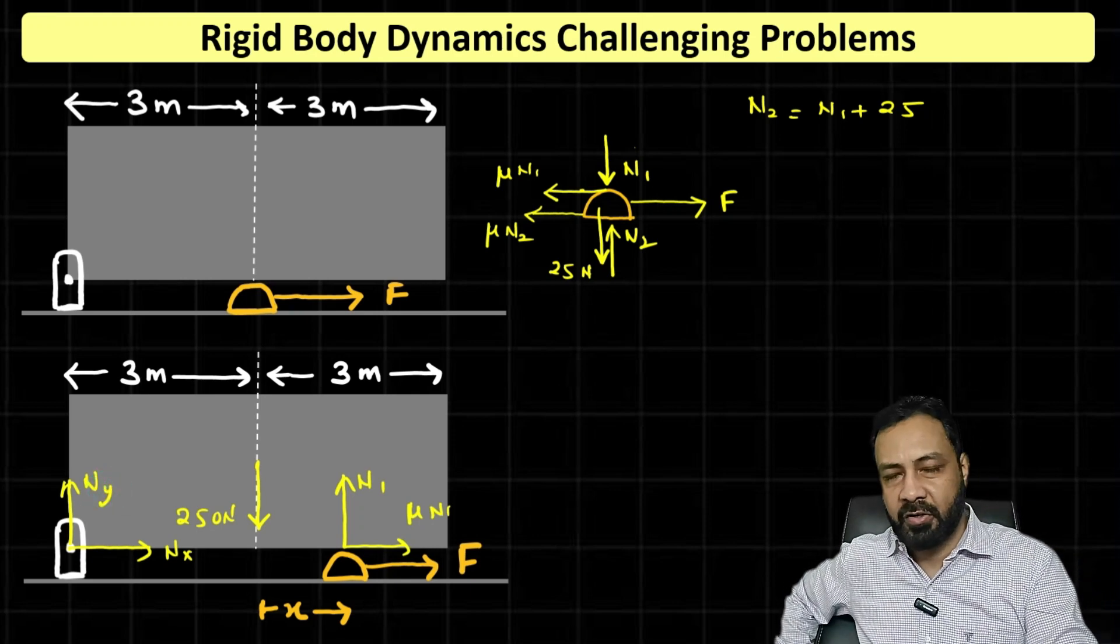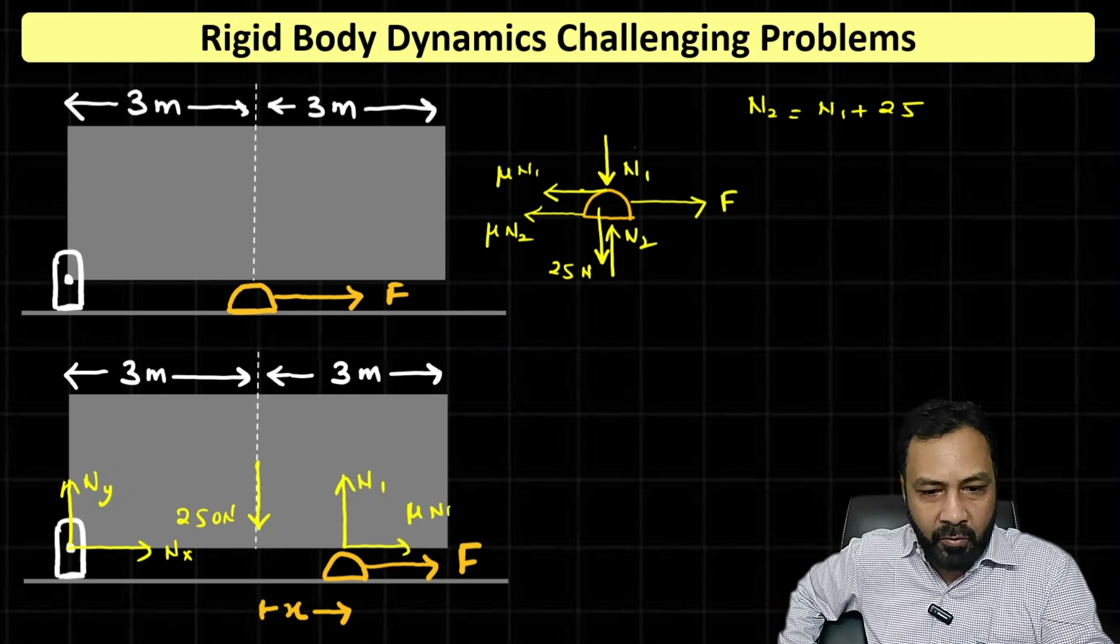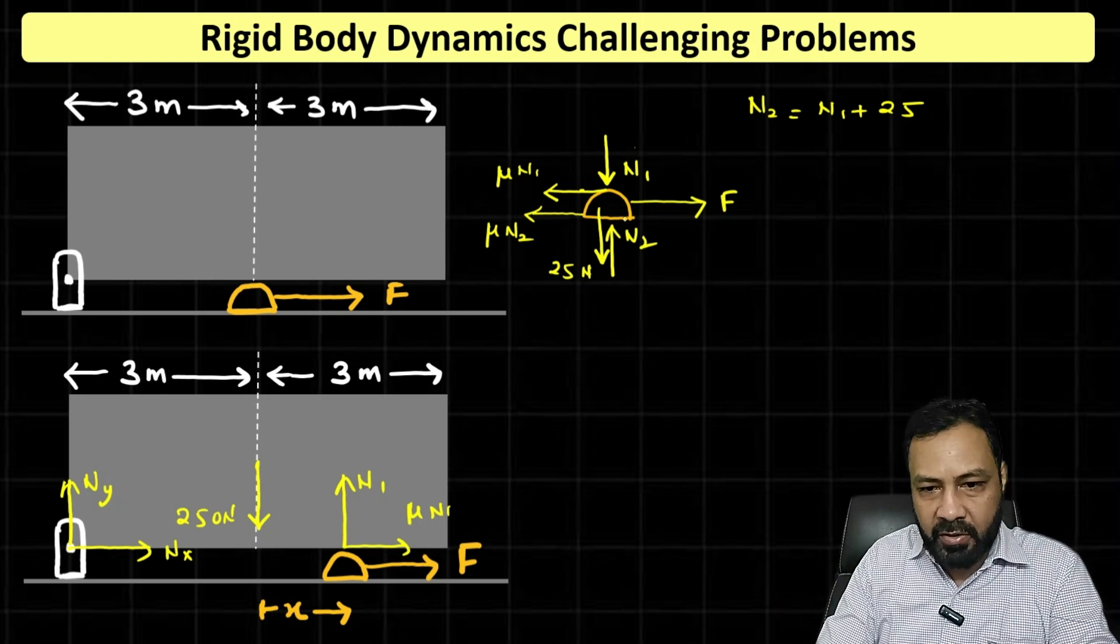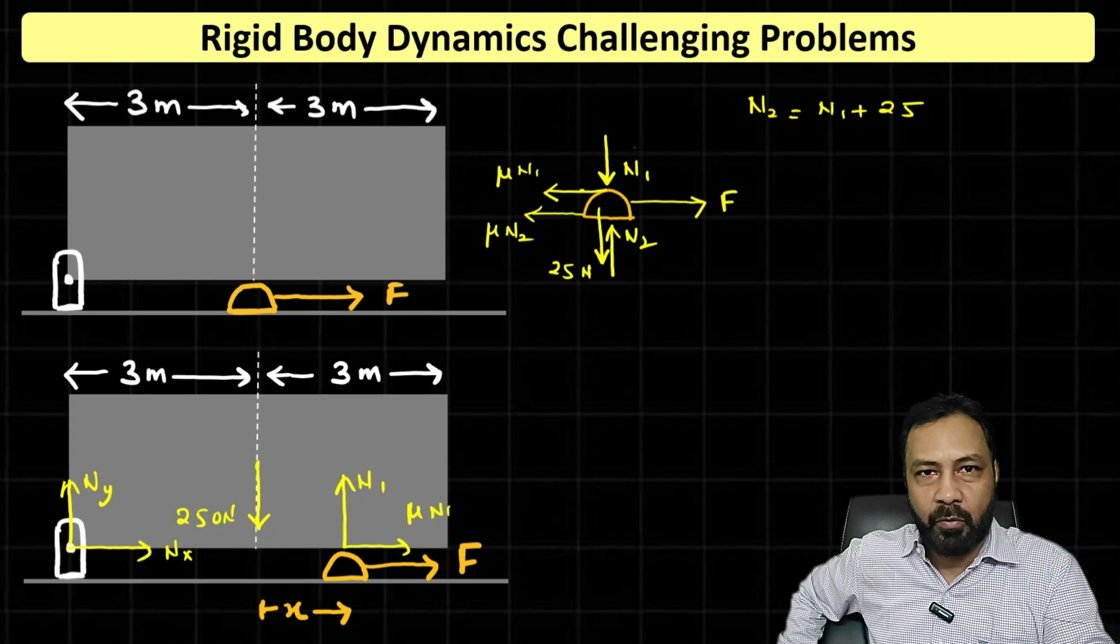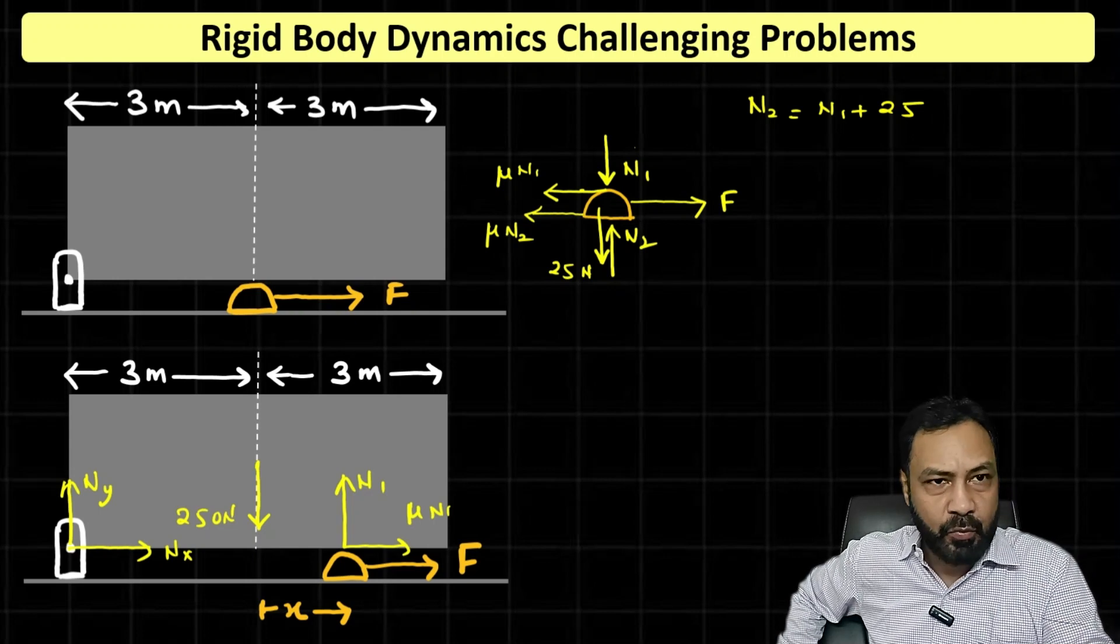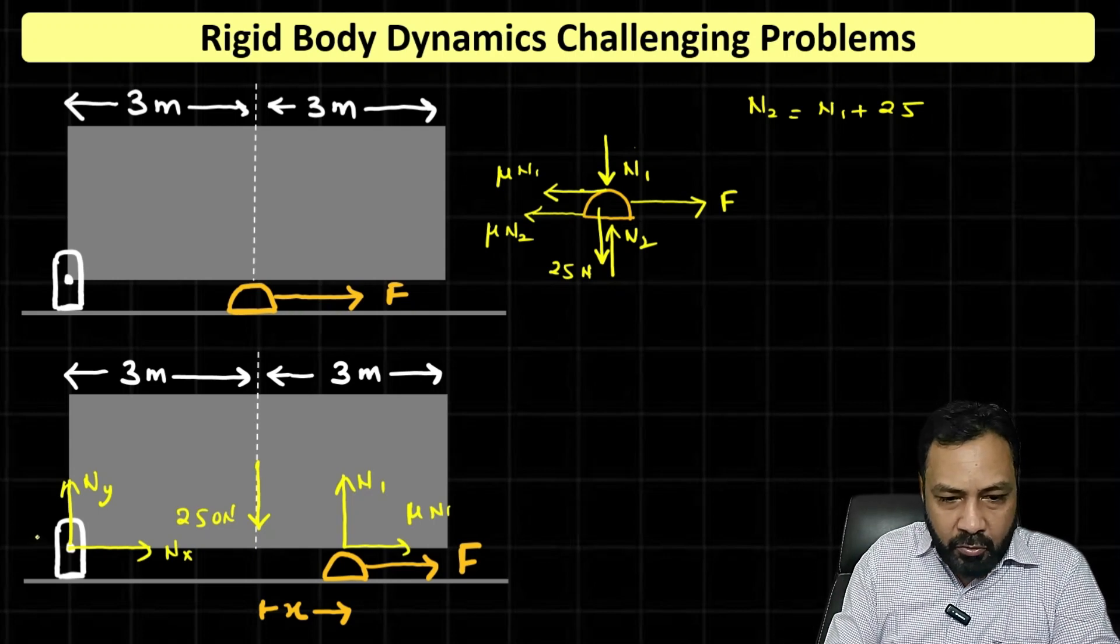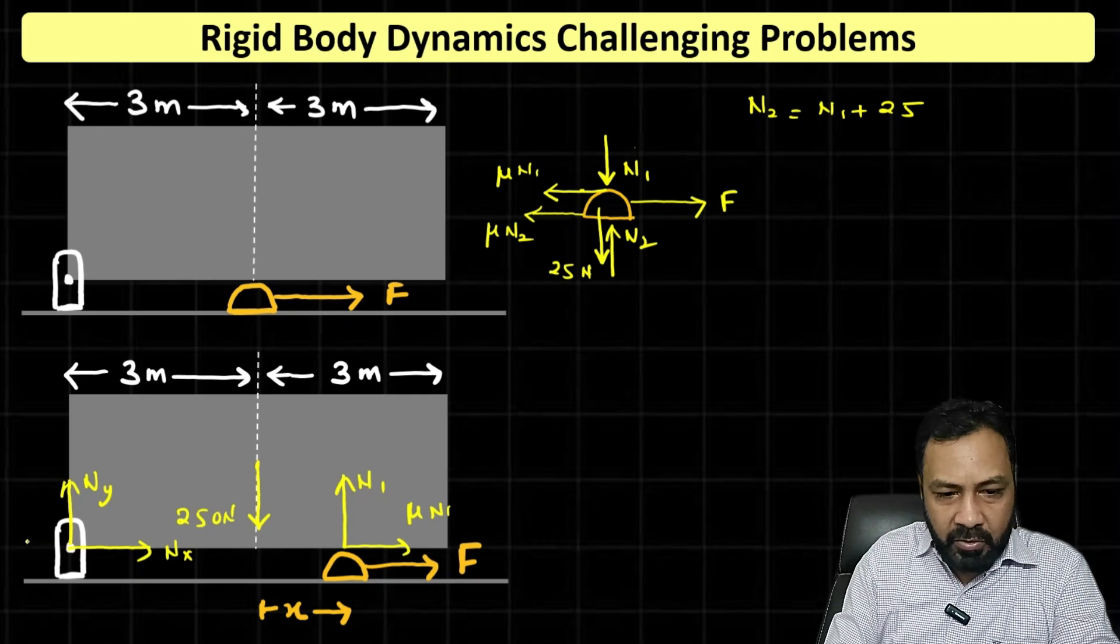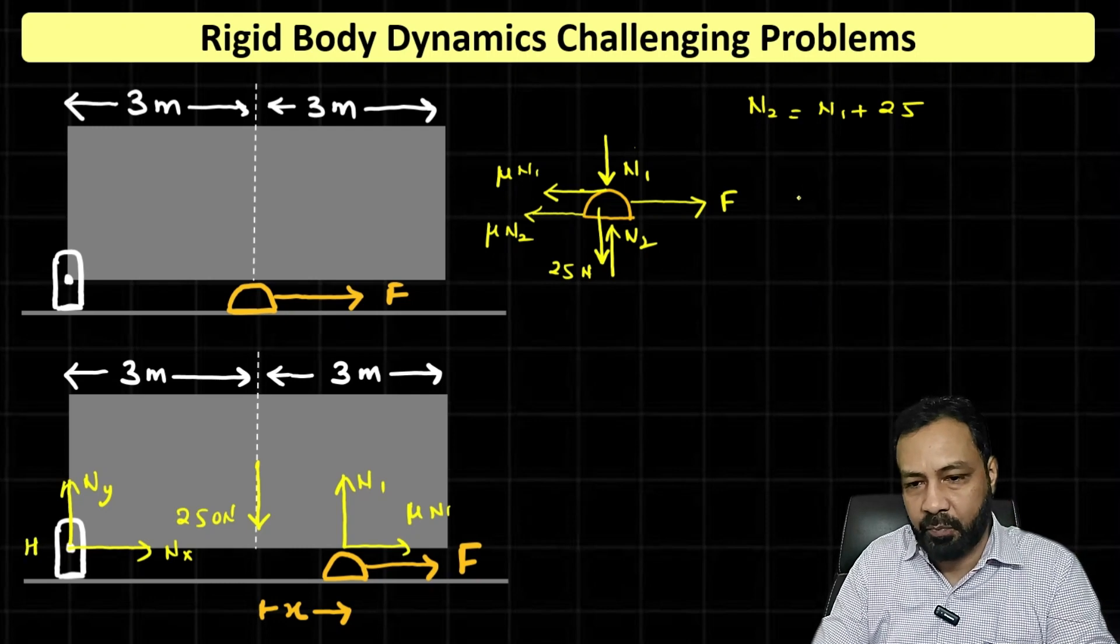So I am not interested in Nx and Ny, I am interested in N1 because that is what the forces are acting on the smaller block. So from the main body A, let me try to find N1 at this moment, and because the torque is always zero, let me take torque about H equals zero.